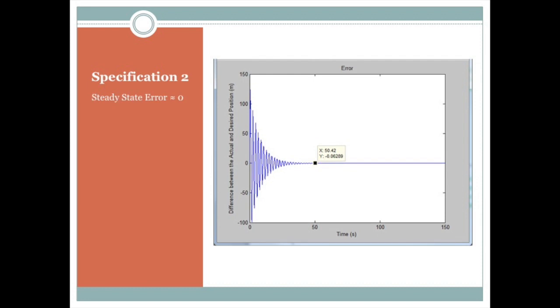Our second spec is to get the steady state error to be about zero, and as I said before, it leads zero by 50 seconds into the simulation, and it leads completely zero more or less by the end of the rocket launch, which is about 127 seconds.